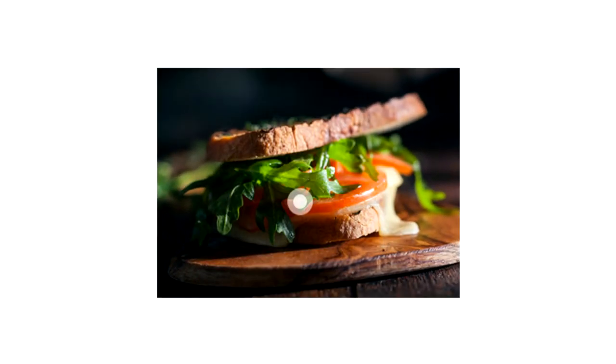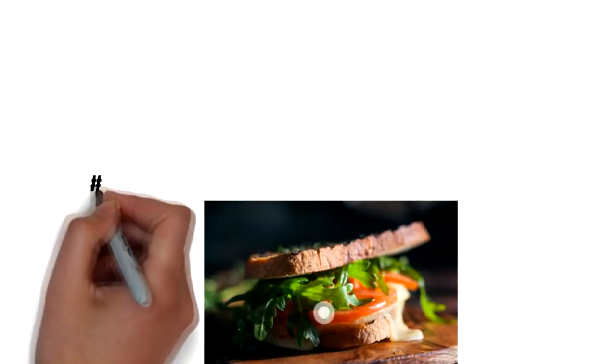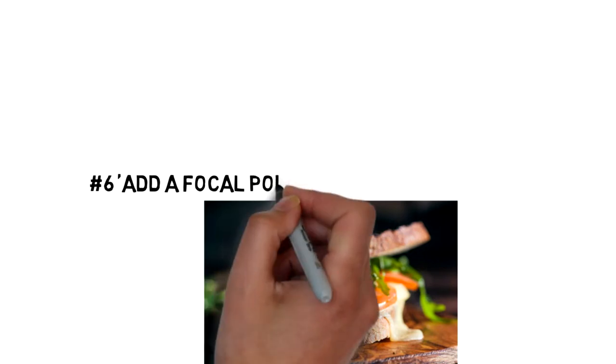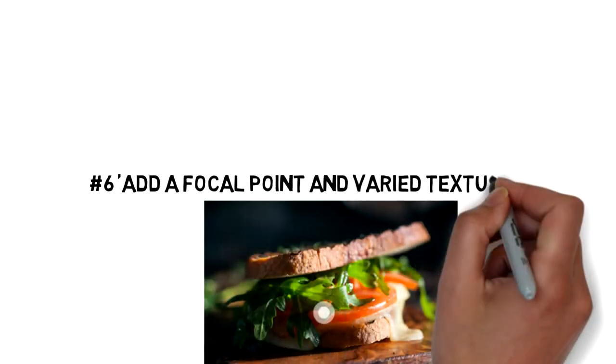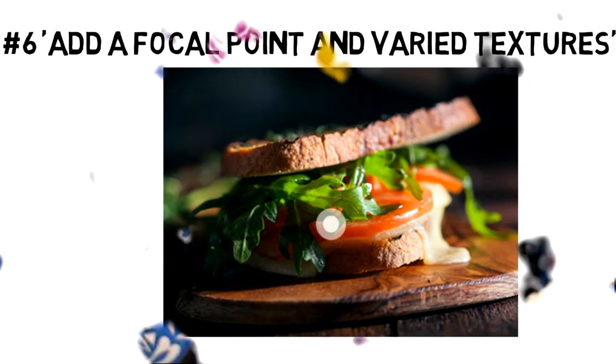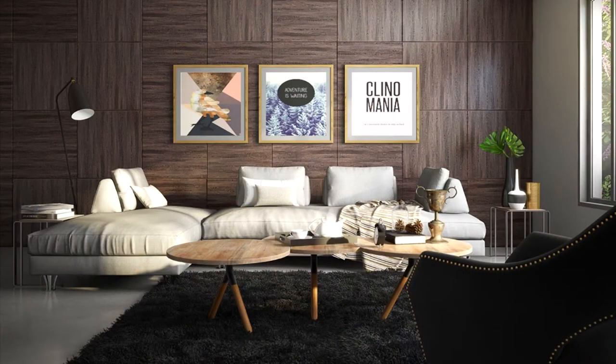Number six: add a focal point and varied textures. When setting up your photo, ensure you have a subject in the foreground that provides a focal point. Use varied textures that create an interesting contrast.